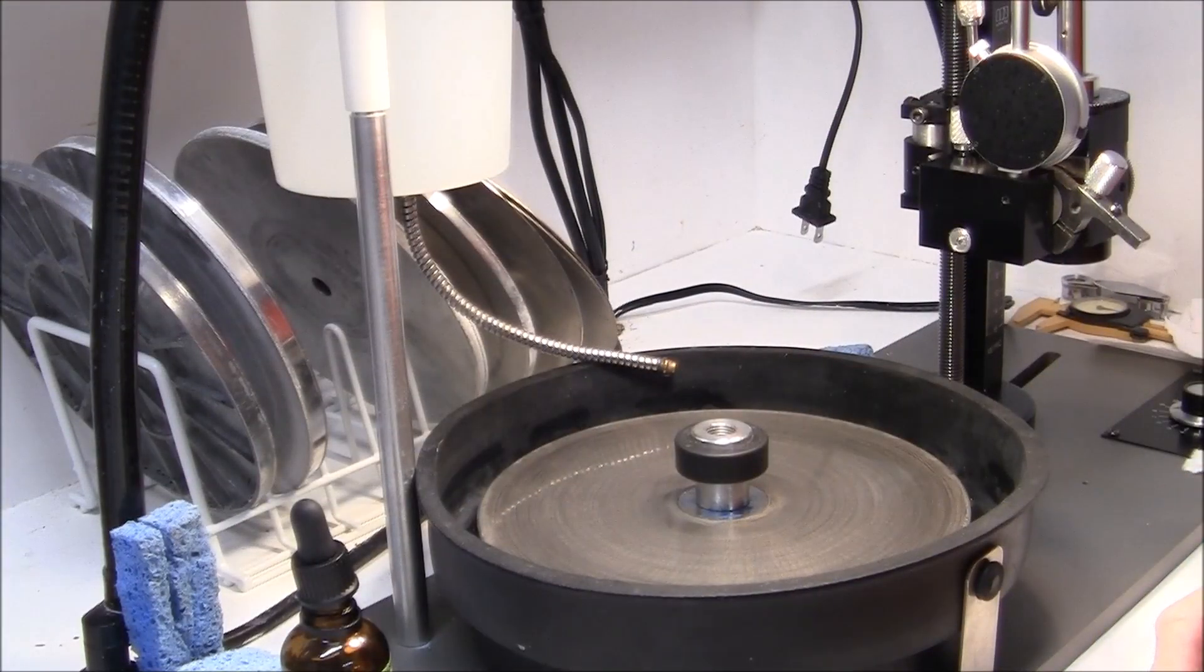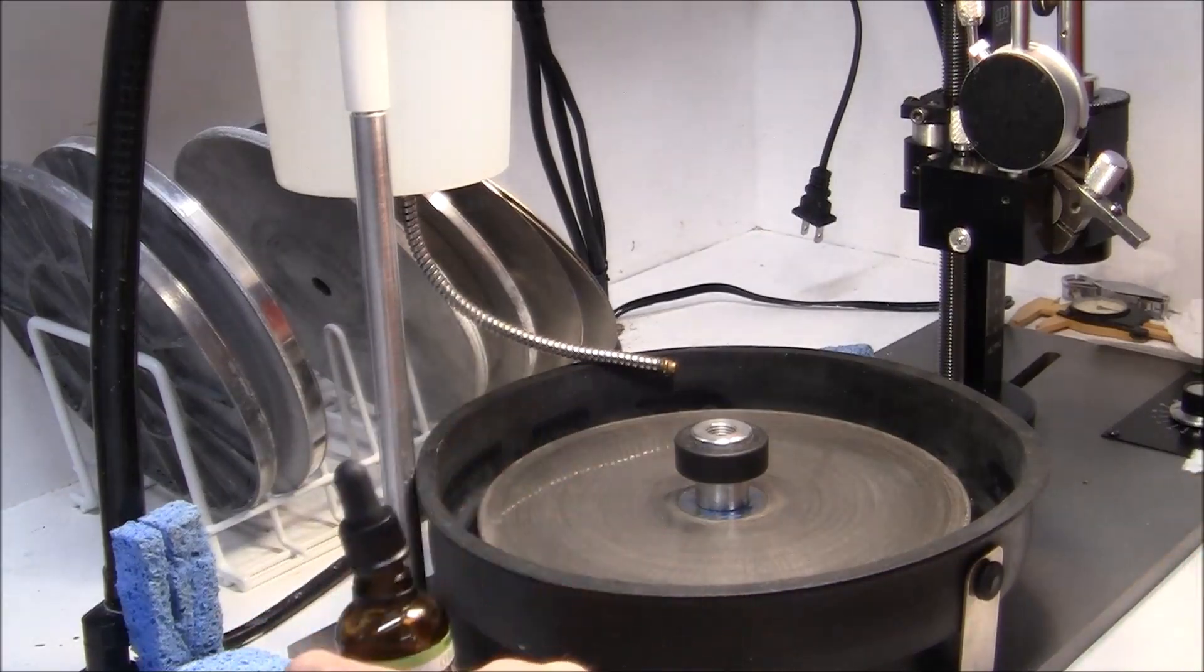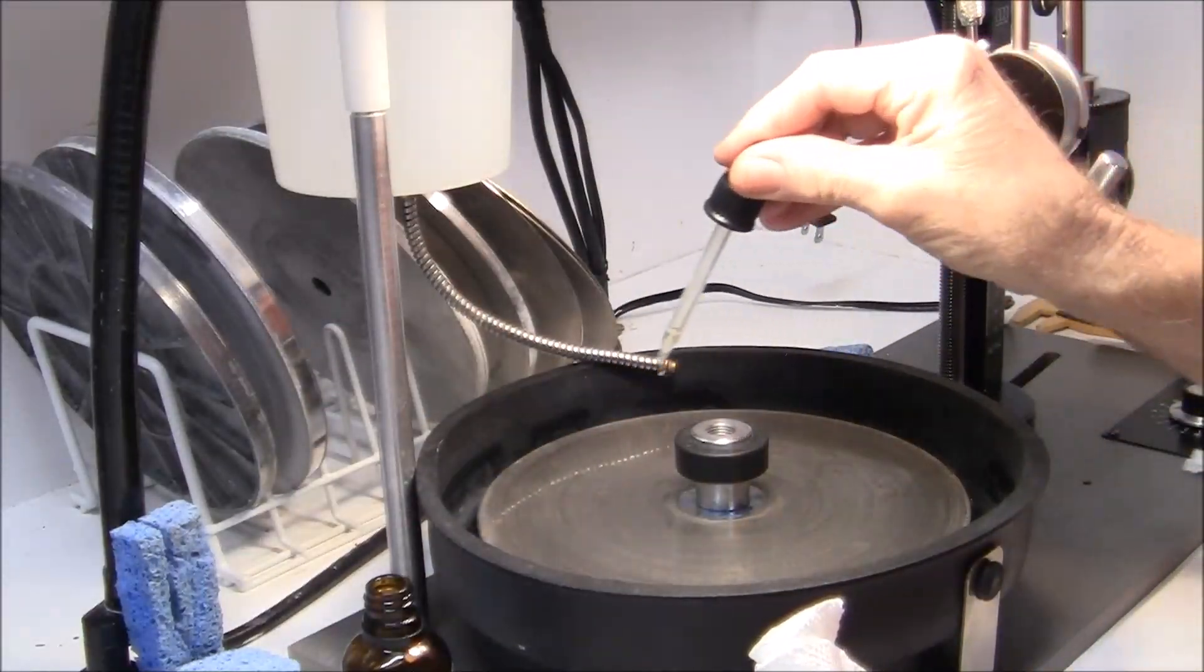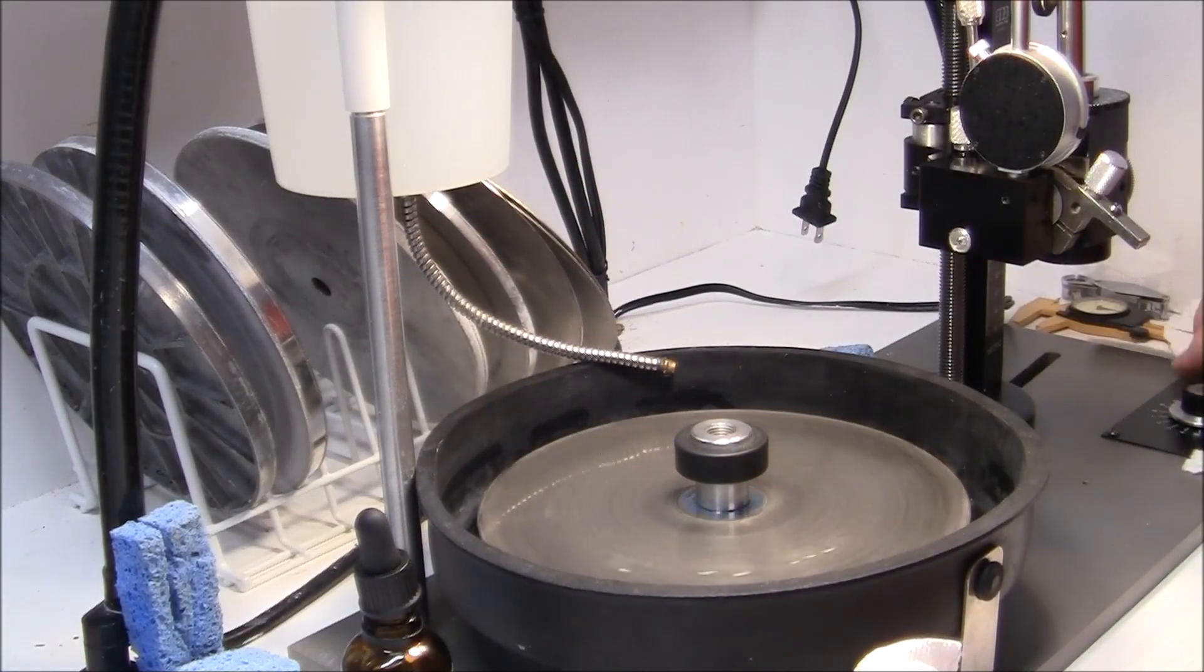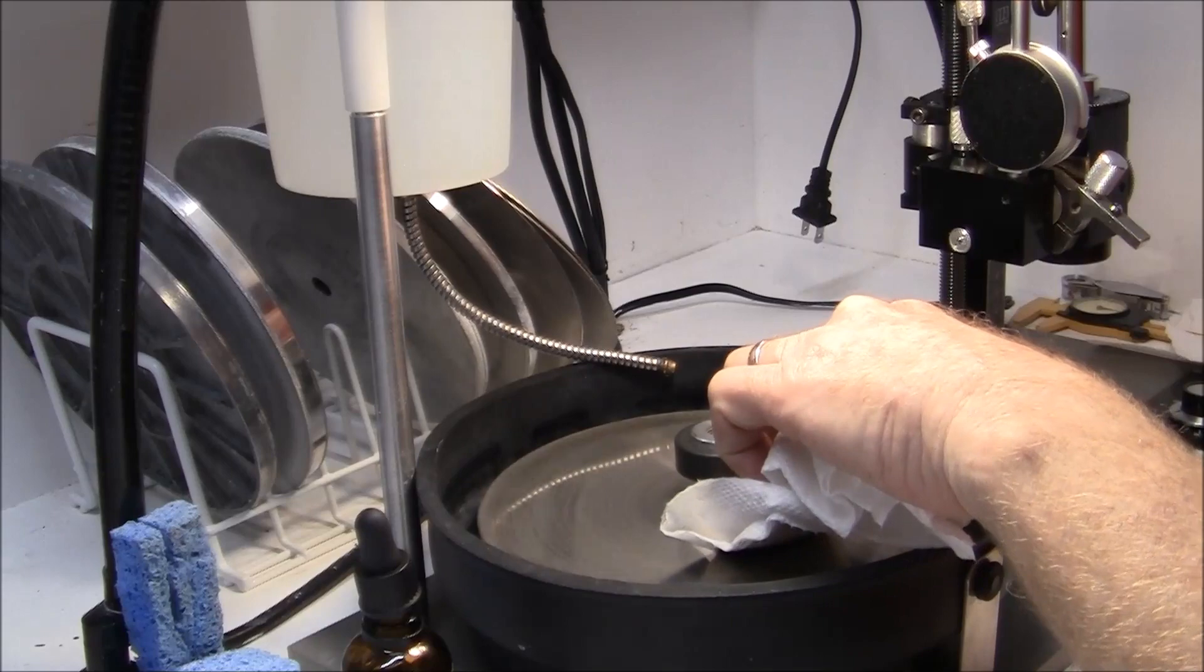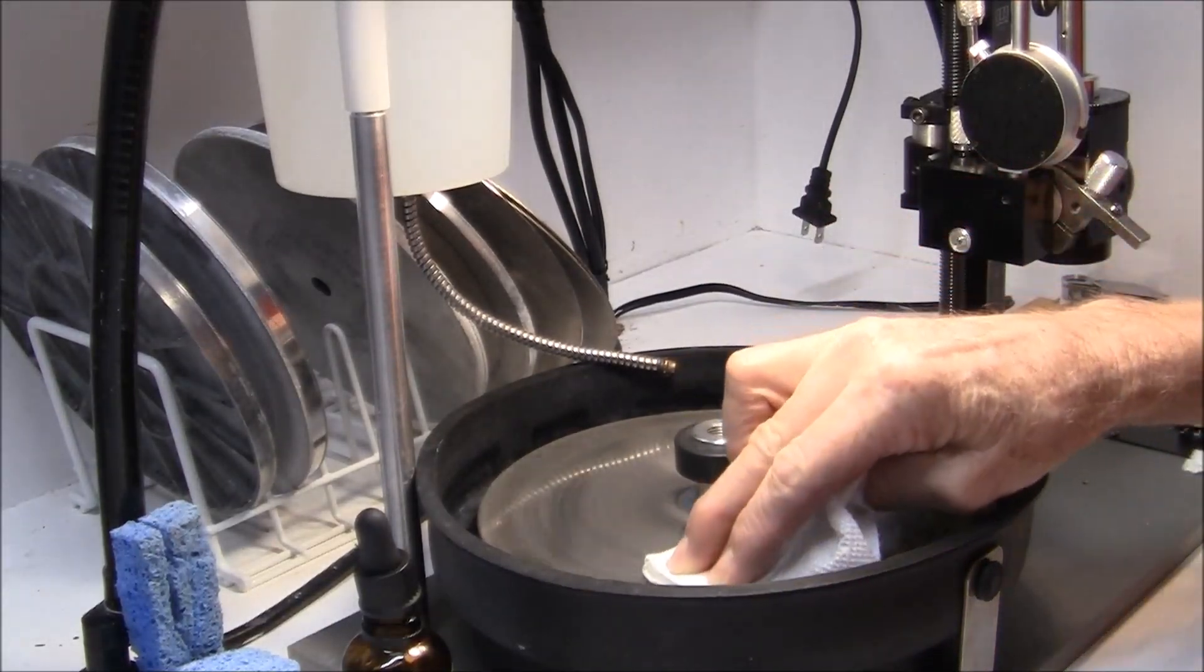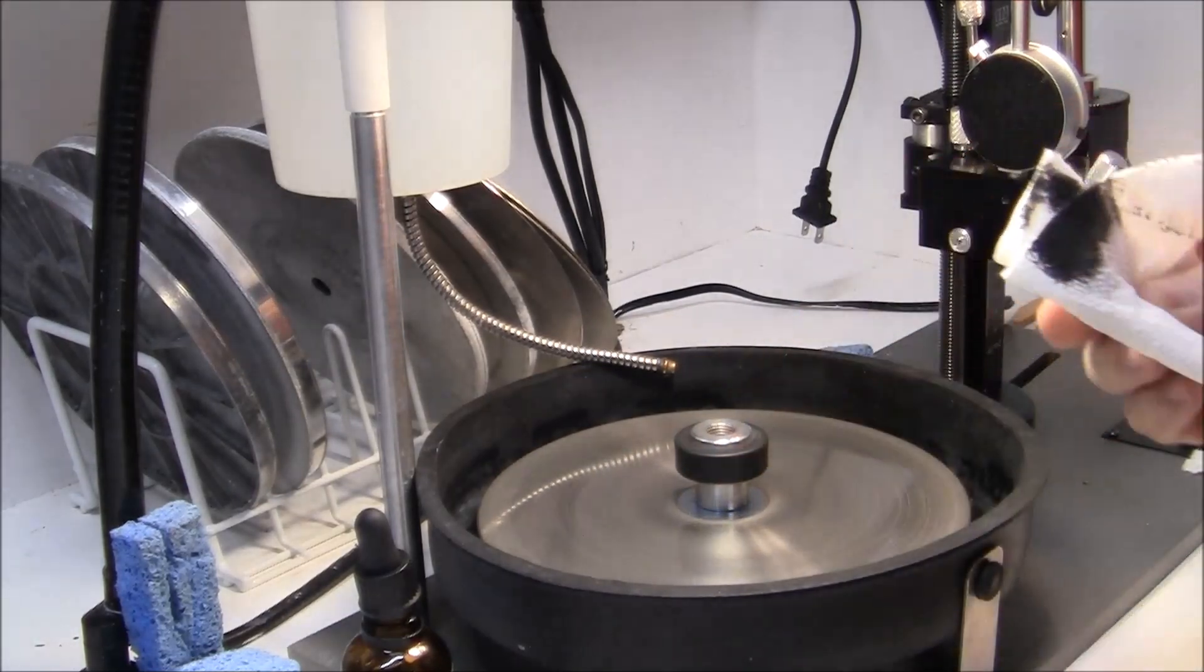I'm going to show you how I clean my tin lap before I put on the 50,000 diamond compound. I've got WD-40, clean paper towel. Spin the lap not too fast. You can see all that residue coming off of there. Pretty bad.